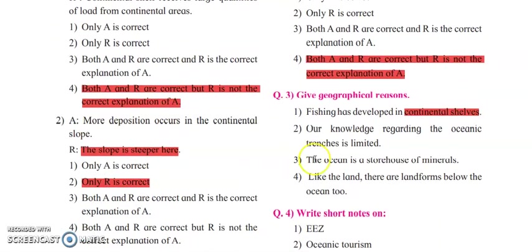Next: our knowledge regarding the ocean trench is limited. Ocean trench is the deepest part of the ocean floor. It is a remote area — you cannot reach there. It is very difficult for any human to go there and see it, as it is very deep. Mariana Trench is around 11 kilometers deep, and in the Indian Ocean the Java Trench is around 7.7 kilometers deep.